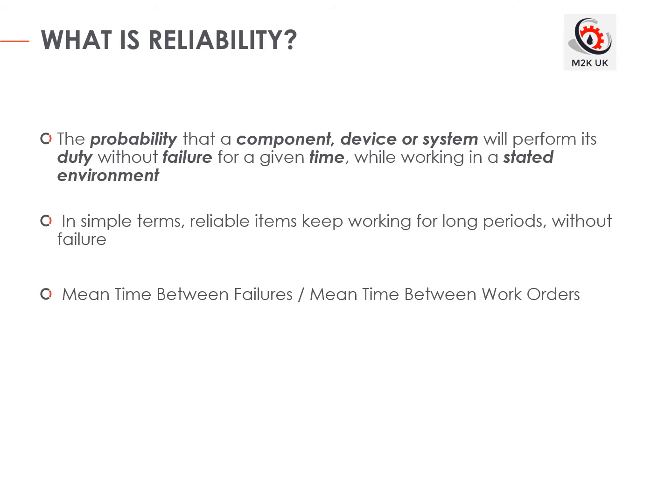An easy way to determine reliability is by looking at the mean time between failures (MTBF) or mean time between work orders at your plant or facility. Both measures give essentially the same answer. MTBF is just the cumulative operating time divided by the cumulative number of failures — it's a useful measure to give us an idea of the scale. Normally, the longer the MTBF, the better.